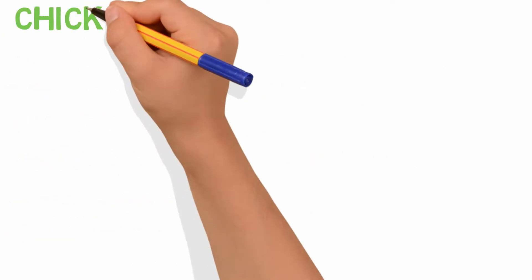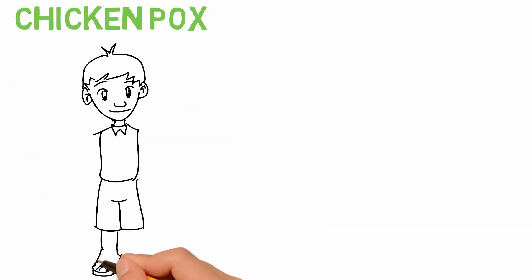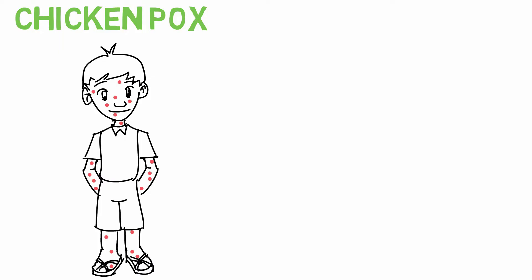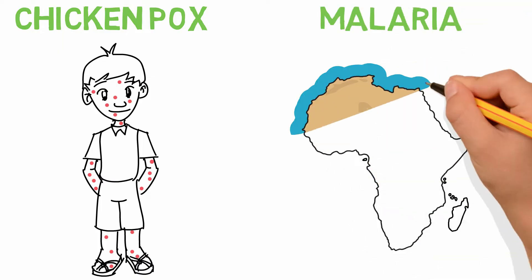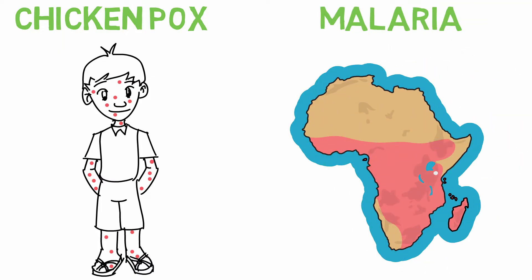Examples include chickenpox, which affects children at a regular, predictable rate, and malaria, which is constantly present in many parts of Africa.